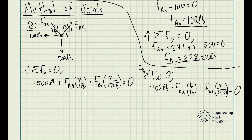For the sum of forces in the x-direction: −100 − FBA × (6/10) + FBC × (8/√128) = 0. Note the sign conventions: the 100-pound force goes left (negative), FBA has a leftward x-component (negative), and FBC goes to the right (positive). This gives us two equations and two unknowns: FBA and FBC.